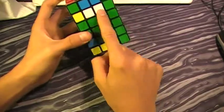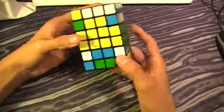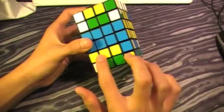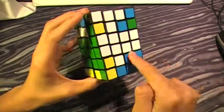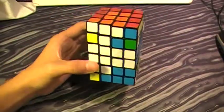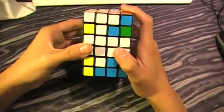All these little center edges are done and slot into place, except for these two. This one needs to go here and this one needs to go here. There's no real algorithm involved, so I'm going to teach you how to solve this.